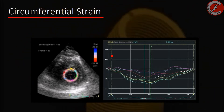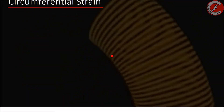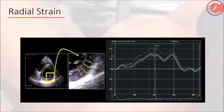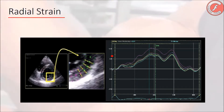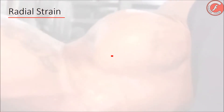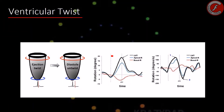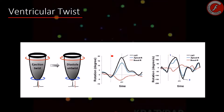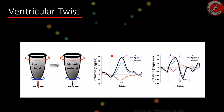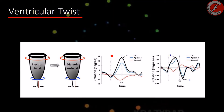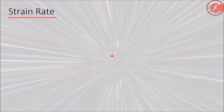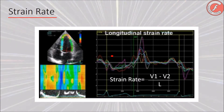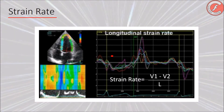Under normal conditions, the circumferential strain value is also expressed as a percentage with negative sign. The radial strain, or deformation, measures the thickening of the muscle fibers that shape the myocardial wall through the parasternal short axis view of the transthoracic echocardiography. Unlike the previous ones, its value is expressed as a percentage with positive sign. The twist, or ventricular torsion, measures the difference of rotation between the base and the apex; it is expressed in degrees and basically depends on subepicardial fibers, with a positive value under normal conditions. Finally, the strain rate, or deformation speed, measures the difference of deformation speed that exists between the base of the ventricle and the apex.